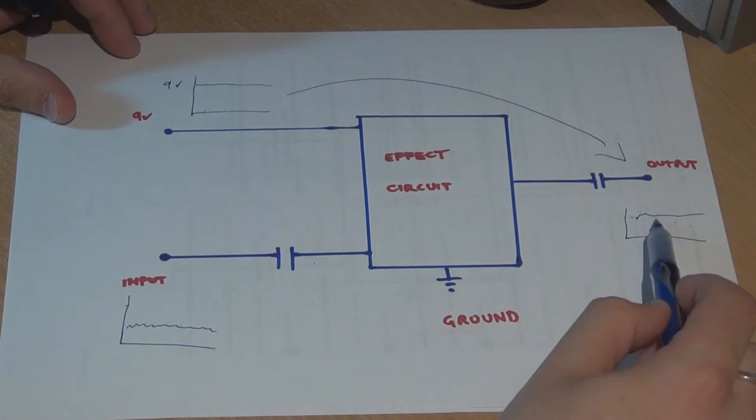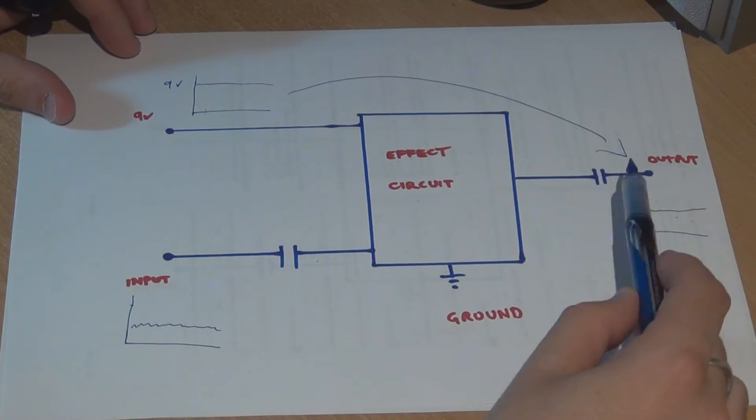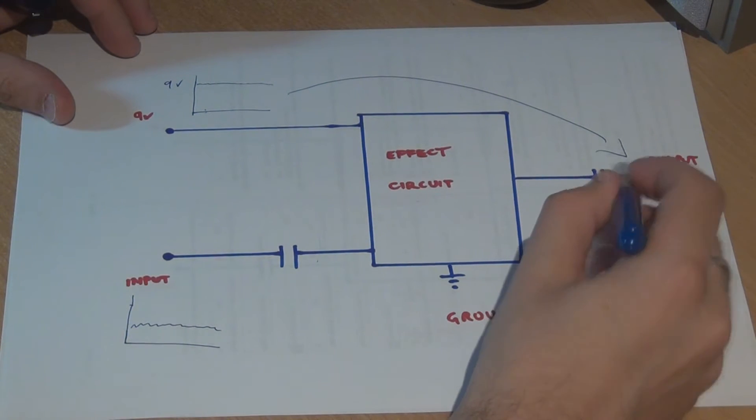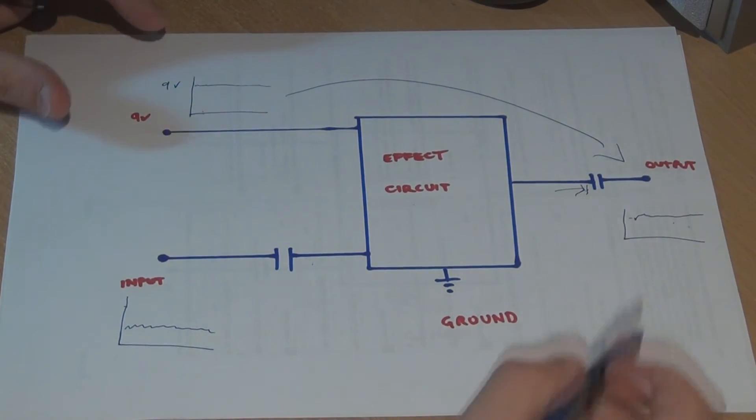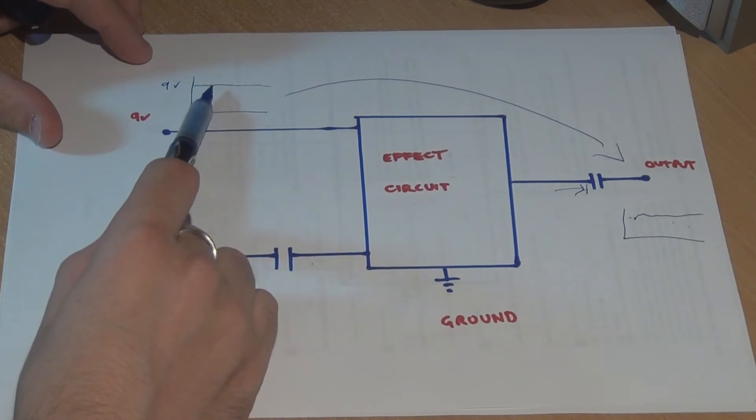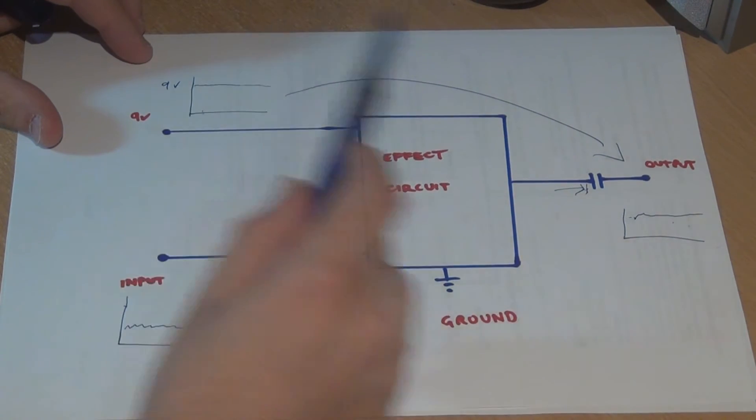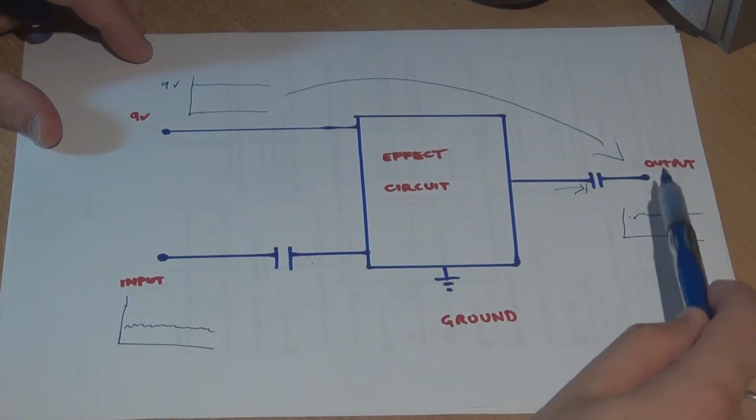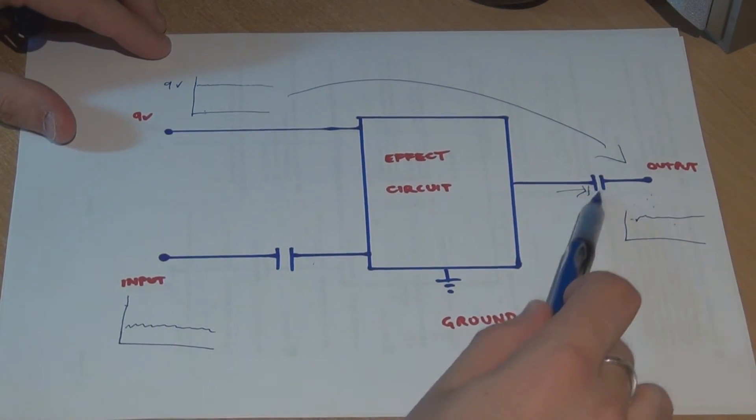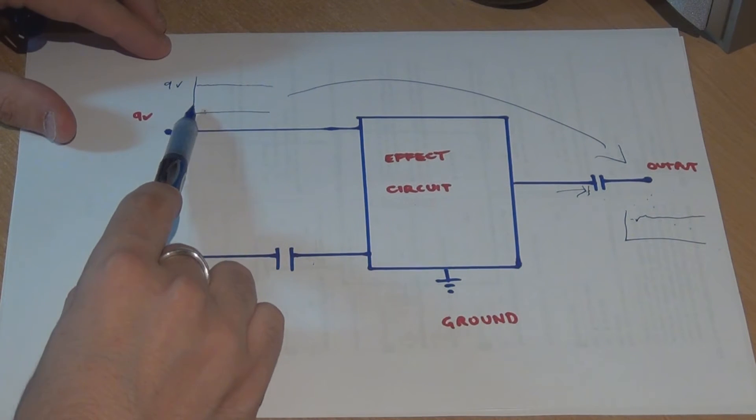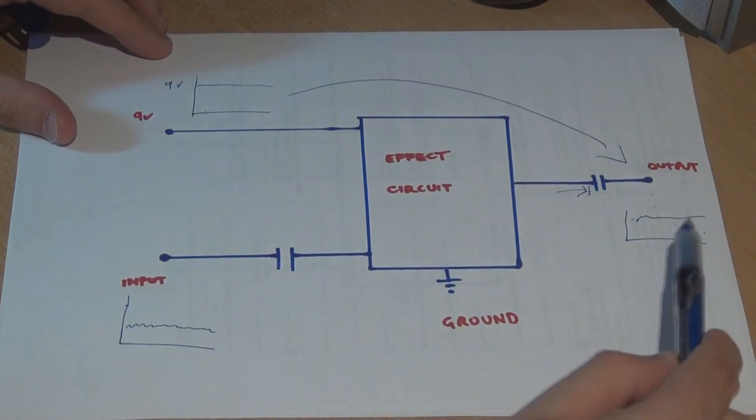And the 9 volts will hit this capacitor and it'll just go no, can't go any further. But the ripple, because the ripple is an alternating voltage, that will actually come through on the output. So I'll just say that once more. The capacitor will block the DC portion of your 9 volts coming in from the 9 volt supply, but it will not block the alternating part of the 9 volts. So that's what you're hearing on the output.